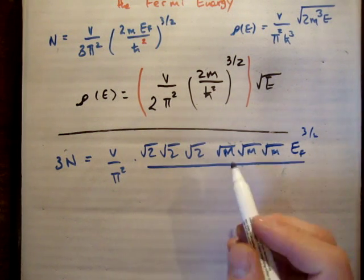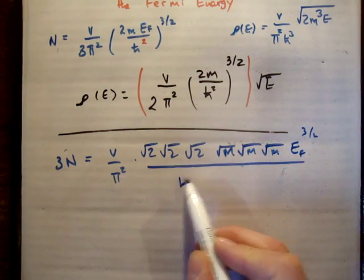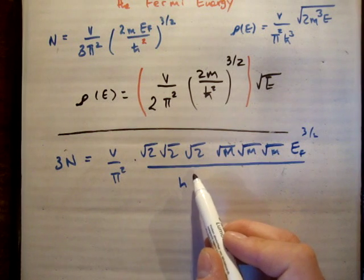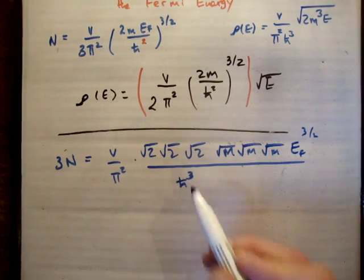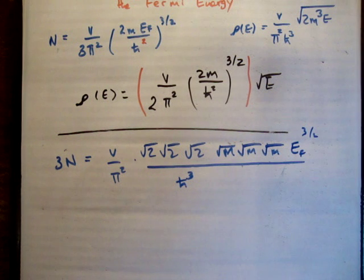Divided by h bar squared, so it's going to be h cubed, basically like that. Just h bar cubed, because we're going to get the square root of h bar cubed there.